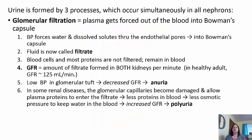Urine is formed in three main processes happening simultaneously through different parts of the nephron. The first is glomerular filtration — plasma is forced out of the blood into the Bowman's capsule. Blood pressure forces water and dissolved solutes through the endothelial tissue or pores of the Bowman's capsule. This fluid is now called filtrate because it's no longer in the blood vessel. Blood cells and most proteins cannot be filtered here because they are too large, so they remain in the blood.